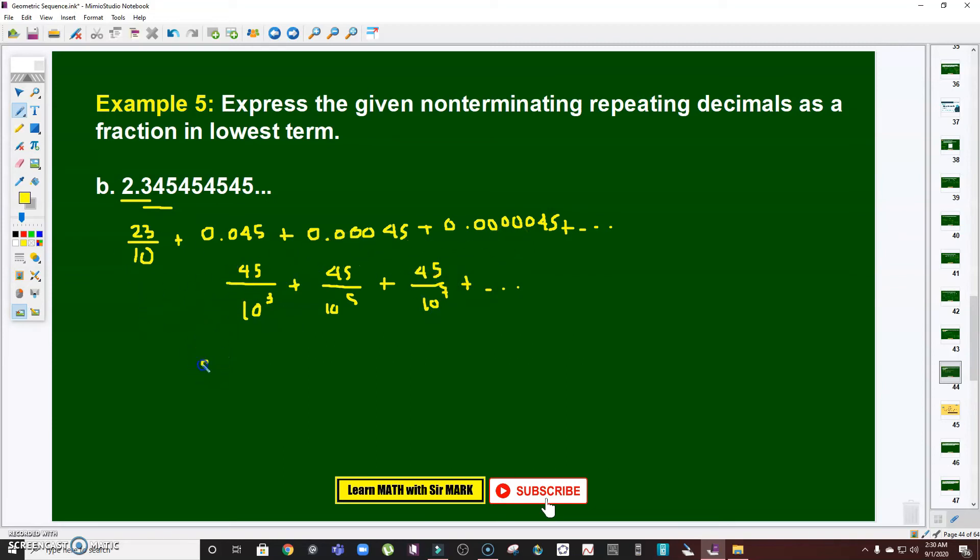Therefore, again, sum to infinity. That's equal to the first term: 45 over 10 cubed over 1 minus the common ratio. The common ratio is this divided by this, which is still the same: 1 over 10 squared.